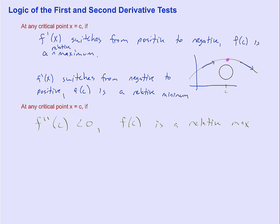which means that the second derivative is negative. So at that critical point, if the second derivative is negative then f of c is a relative max.